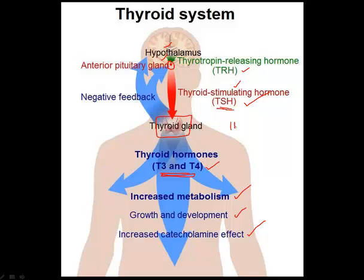Now, consider hypothyroidism, where your gland is under-functioning, or it is not functioning properly. So, you can expect the T3 and T4 levels to go down, because the gland is not functioning properly. When your gland is not functioning properly and the T3 and T4 levels are low, it gives a feedback on your brain stating that these levels are low, so more of TSH is produced to stimulate your gland. So, in hypothyroidism, you have low T3 and T4, and you have high TSH.